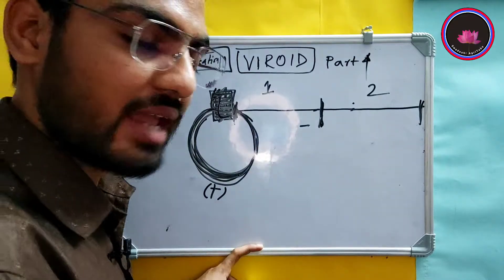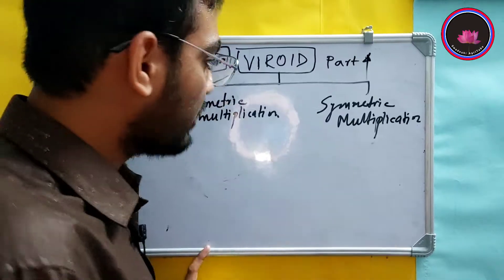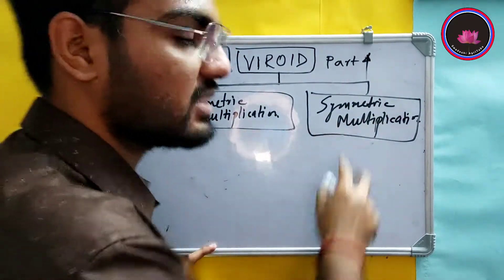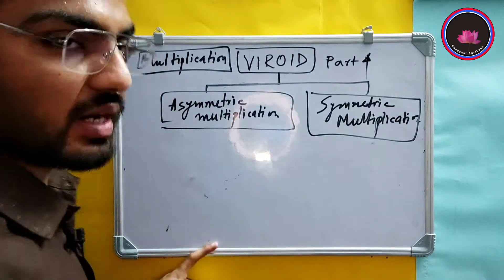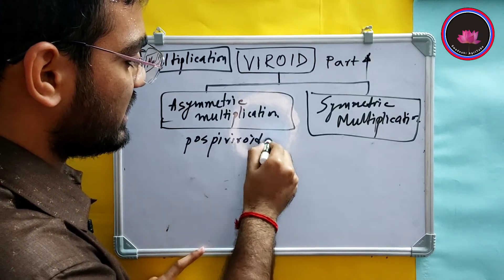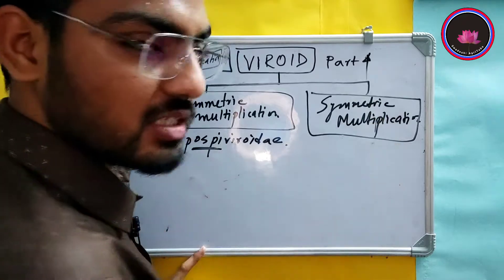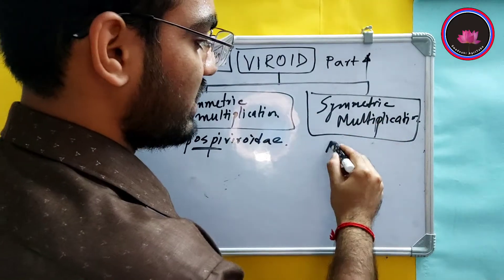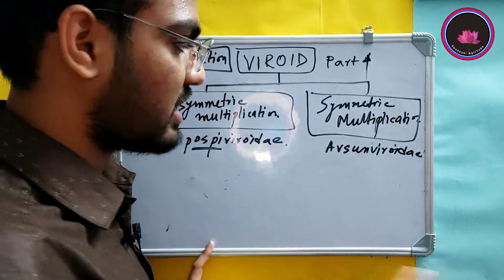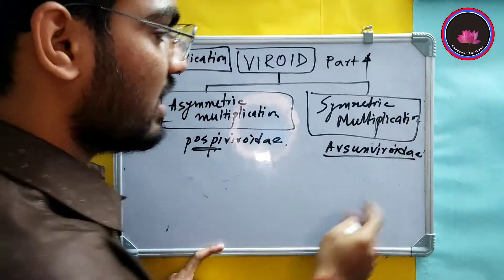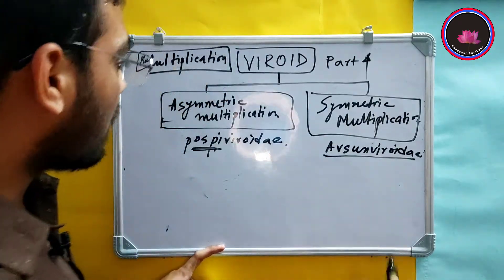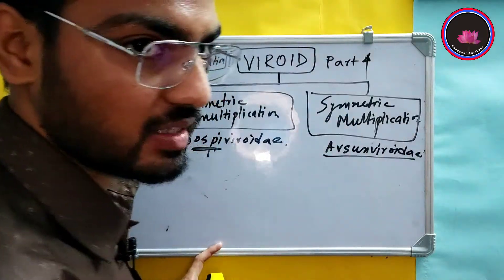There are two types of multiplication: asymmetric multiplication and symmetric multiplication. Asymmetric multiplication is shown by the Pospiviroidae, and symmetric multiplication is seen by the Avsunviroidae. Remember, viroidae is a group with two families — Pospiviroidae and Avsunviroidae. Pospiviroidae shows asymmetric multiplication and Avsunviroidae shows symmetric multiplication.